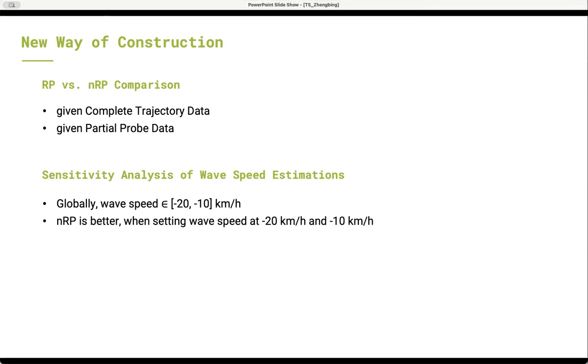Moreover, we did the sensitivity analysis of wave speed. It is well known that the wave speed is globally between negative 20 kilometers per hour and negative 10 kilometers per hour. Therefore, we made comparison using wave speed at extreme conditions. Those are negative 20 kilometers per hour and negative 10 kilometers per hour. The results show that the NRP-based method is not sensitive to the setting of wave speed and it still outperforms RP-based method.